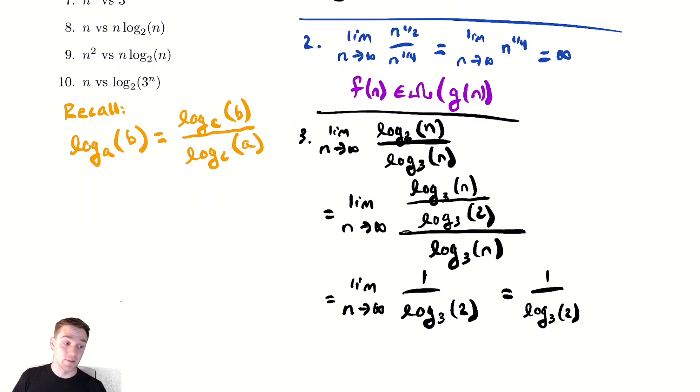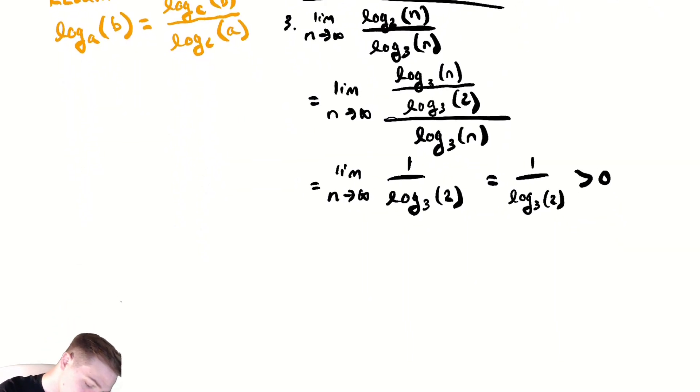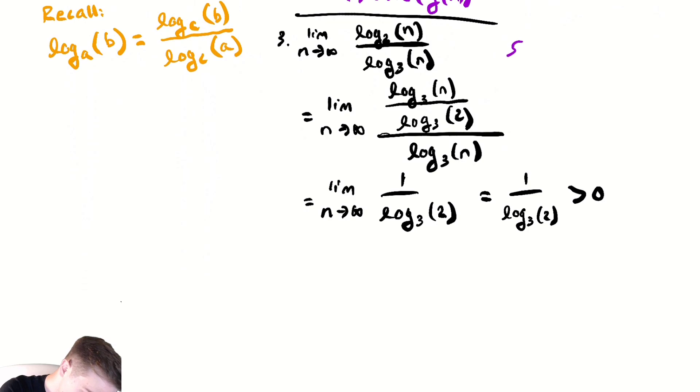Now what happens to that constant as n changes? Nothing. It's a constant. So we get one over log base three of two. The fact that we had that change of base formula tells us in some sense that the only difference between different log bases is some factor of a constant. That's it. So this is not surprising that they grow at roughly the same rate. This constant is greater than zero. Log base three of one would be zero and log is an increasing function so anything larger than one plugged into a log would give me a positive number. So my conclusion is that the function f of n the first log is in theta of the second log.